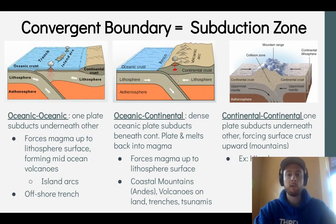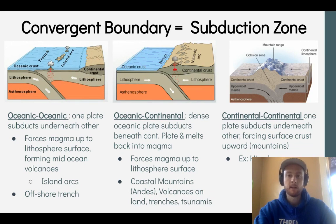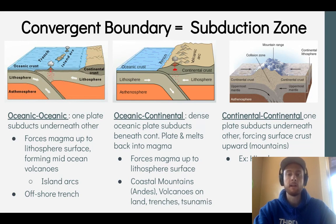When an oceanic plate collides with a continental plate, the oceanic plate melts back into magma in the mantle, but also forces some magma up toward the surface, leading to volcanoes on land and narrow coastal mountain ranges like the Andes in South America. We can also see trenches and tsunamis formed at convergent plate boundaries, which we'll explore in more detail in class. Finally, when two continental plates collide, one subducts beneath the other but also pushes some crust upward, forming large mid-continental mountain ranges like the Himalayas.